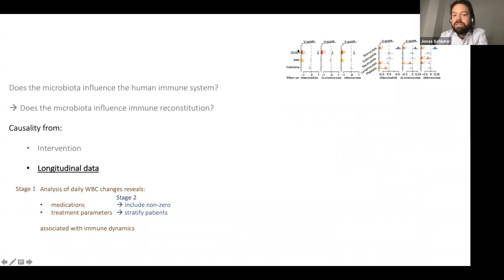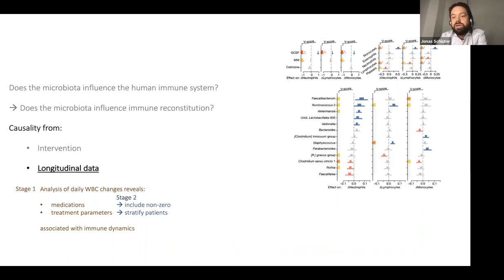We linearize the system and then conduct a Bayesian inference and get, as a proof of principle, first of all, many clinical effects from medications in the way that they were expected. For example, as I mentioned earlier, GCSF is a drug developed to change neutrophil counts and we find that it is the most strongly associated factor in a positive change of neutrophils from one day to another. In that same model, we were then also able to identify many different bacterial genera that also had an effect onto the white blood cell dynamics.